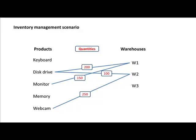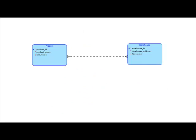The initial entity relationship diagram has a Product entity with product ID as its key, a product name, and an optional unit value attribute. The Warehouse entity has warehouse ID as the primary key, a required warehouse address, and a floor area attribute. Because it's a many-to-many relationship, we see crow feet on both sides. It's a completely dashed line because a product can be out of stock and a warehouse could be empty — neither needs to actually participate in the relationship.